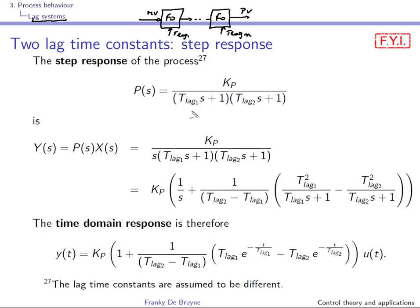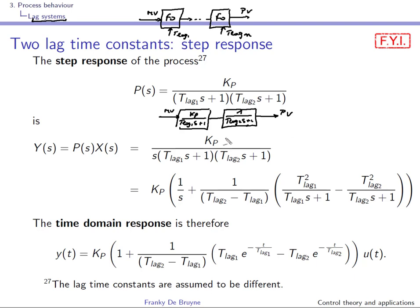Over here you have a second order lag system, and you can see it as kp over (T_lag1 * s + 1) — that's the first order block — followed by a second first order system with gain one and time constant T_lag2 * s + 1. What you can do is compute the step response of this second order lag system exactly, by computing the response in the s-domain, multiplied by 1/s, then doing the partial fraction expansion.